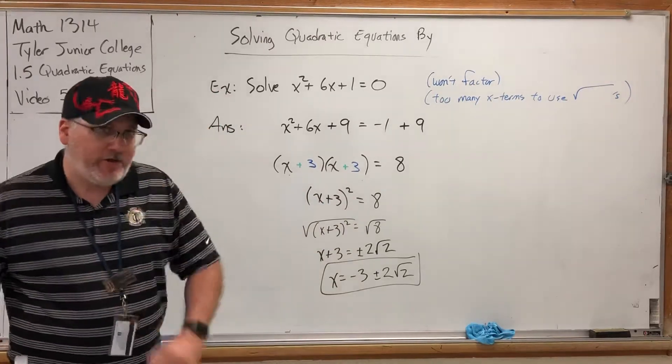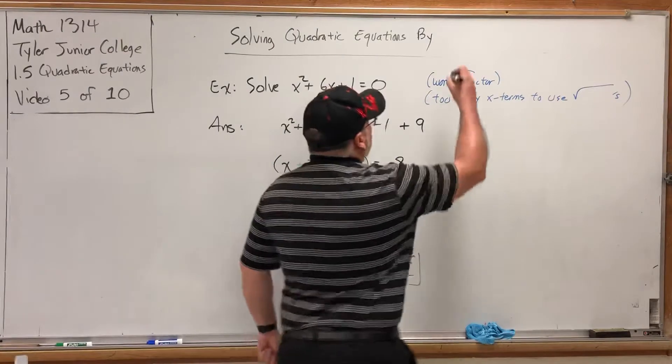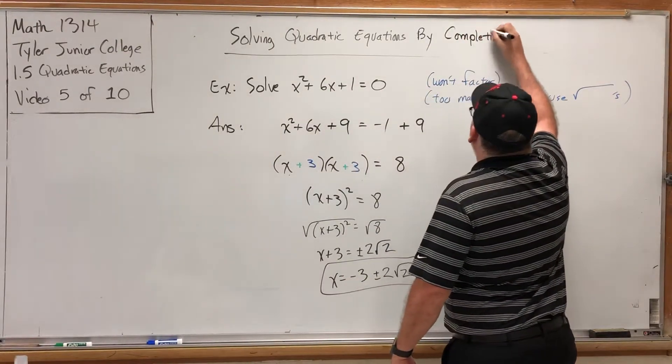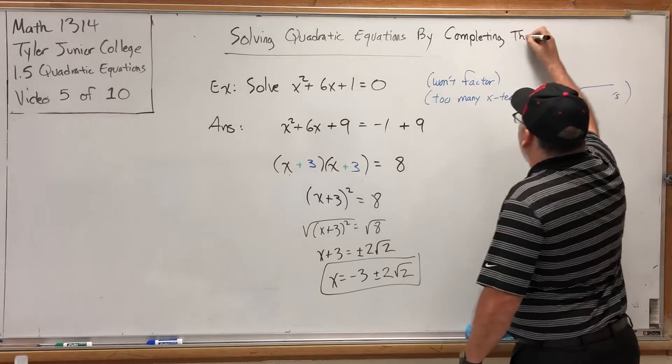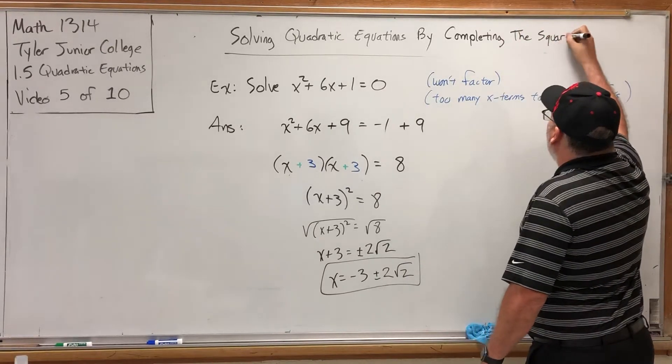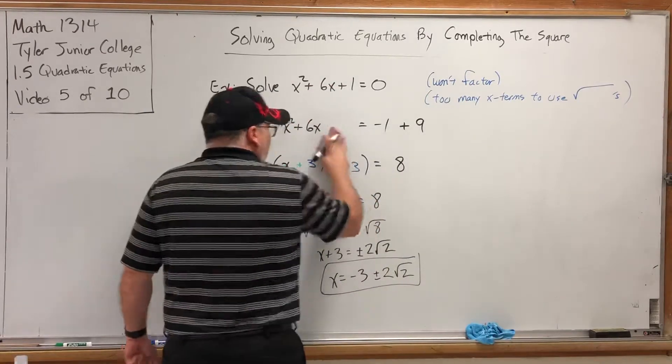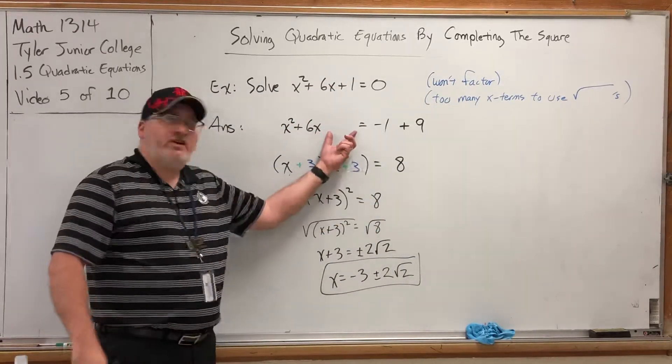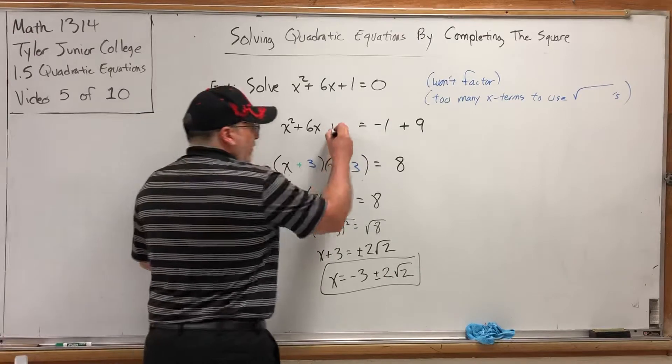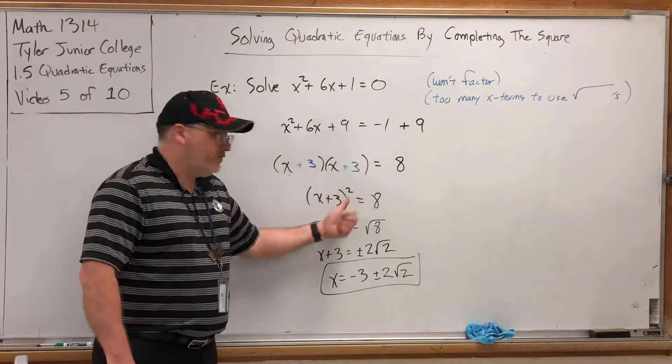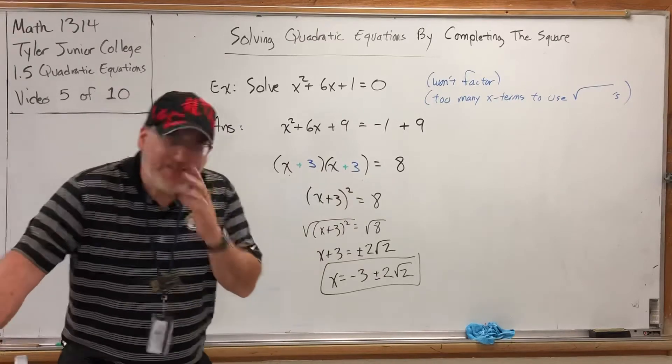This technique, you may already know, is called completing the square. The phrase completing the square refers to completing the trinomial with a perfect constant that causes it to factor into a square, completing the square.